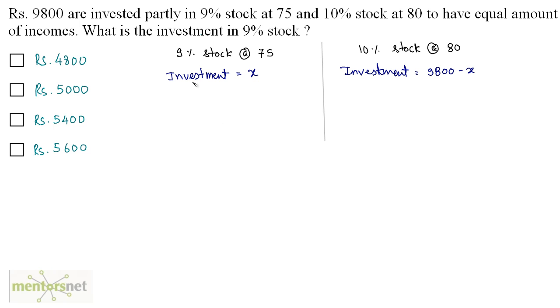Now let us calculate the number of stocks required to be purchased. So N here equals the total investment upon investment on one stock, that is the total investment upon the market price, the market value of one stock that is 75. So X by 75 is the number of shares in 9% stock and the number of shares in 10% stock will be 9,800 minus X upon 80. 80 is the market value.